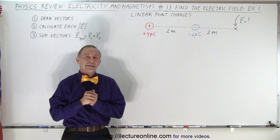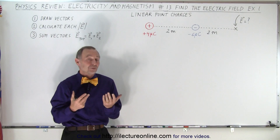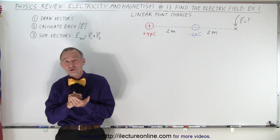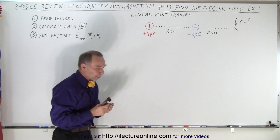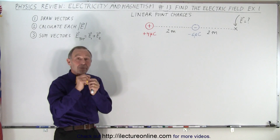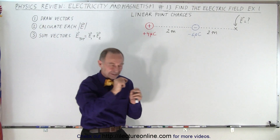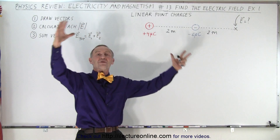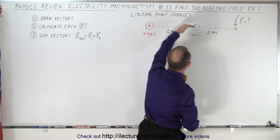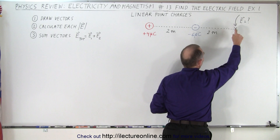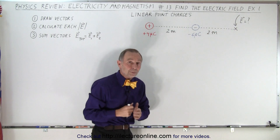Welcome to our lecture online. Let's review how to find the electric field due to various arrangements, starting with point charges arranged on a line. Whenever we try to find the electric field, it will be at some point in space. We'll have the charges on a line, and the point where we want to find the electric field will also be along that line — which makes it easier because you don't have to worry about angles.